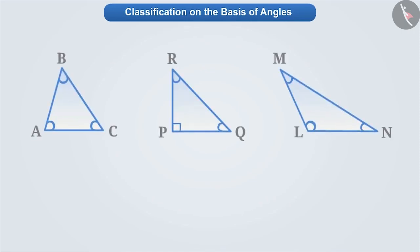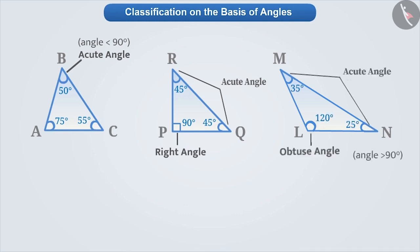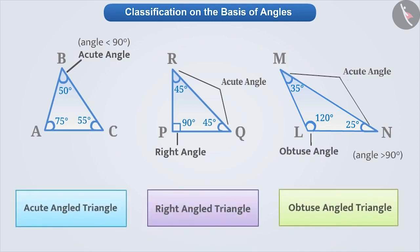Now, let's learn how to classify triangles on the basis of angles. Here, three triangles are given. Can you find any difference by looking at their angles? If we look at triangle ABC, then all its angles are acute angles. If we look at triangle PQR, then it has two acute angles but one right angle. Similarly, in triangle LMN, we can see that there are two acute angles but one obtuse angle. With this understanding, we can classify the triangles in the following ways.